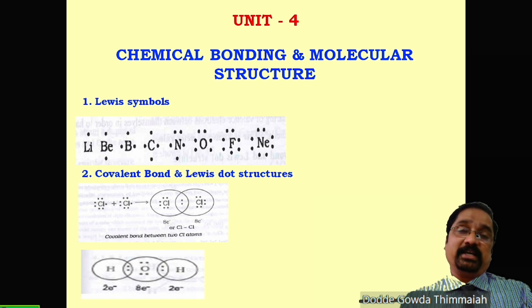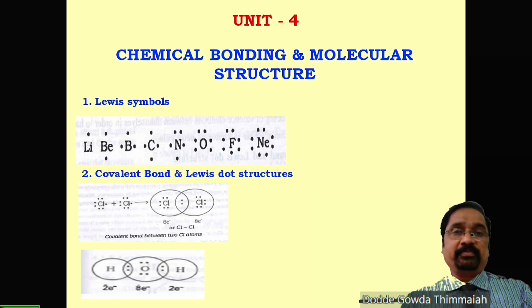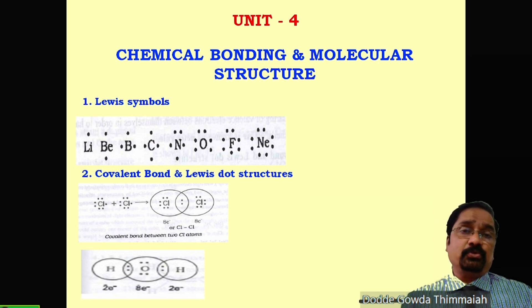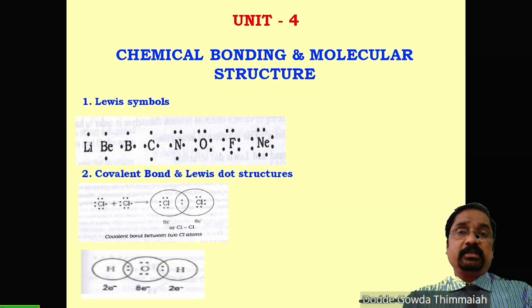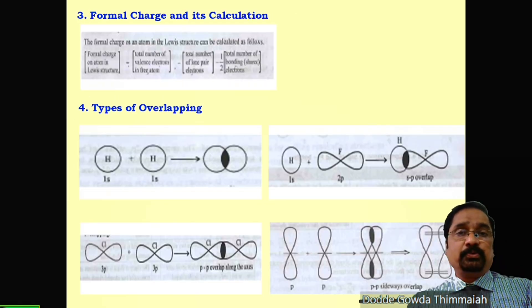Let us take water as an example. Oxygen is the central atom, which has six valence electrons. It needs just two more electrons to complete its octet. Hence, it shares two electrons with two hydrogen atoms to form two single bonds between oxygen and hydrogen. As a result, oxygen will have eight valence electrons after sharing, and it is now stable. In a molecule, none of the atoms normally carry any charge.